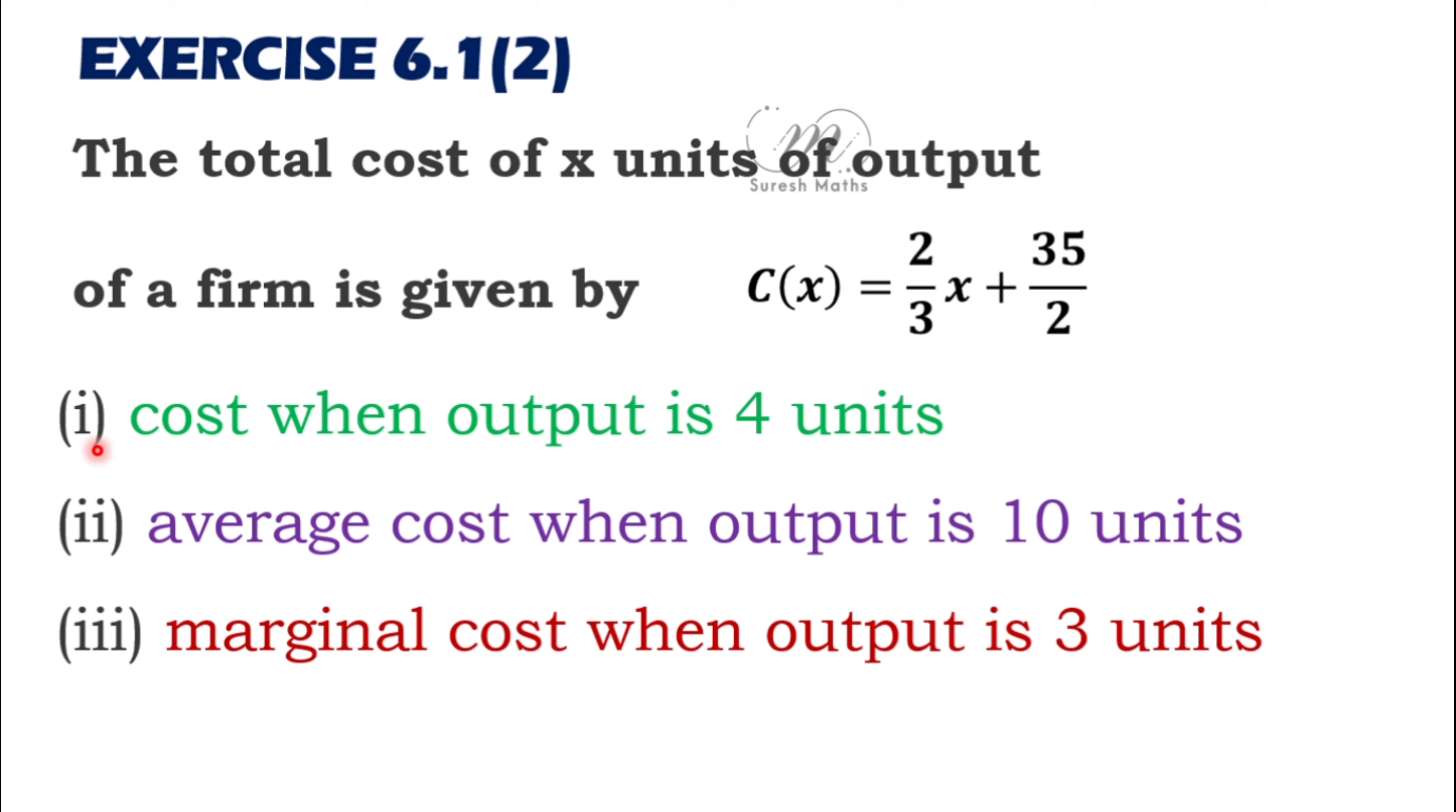Number one: solve cost when output is 4 units. Average cost when output is 10 units. Marginal cost when x is 3 units. So x values are 4, 10, 3 and we need to find cost, average cost, and marginal cost.